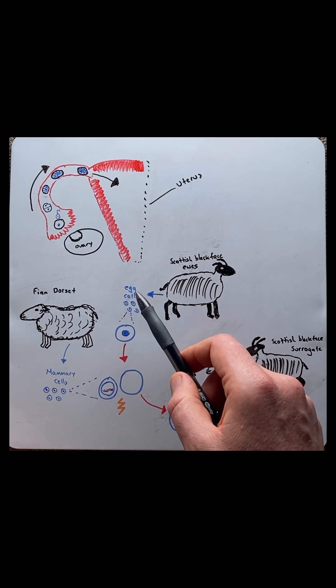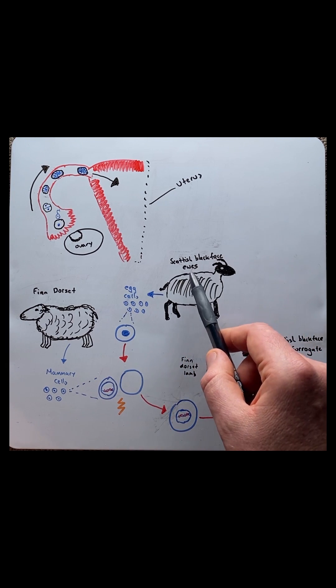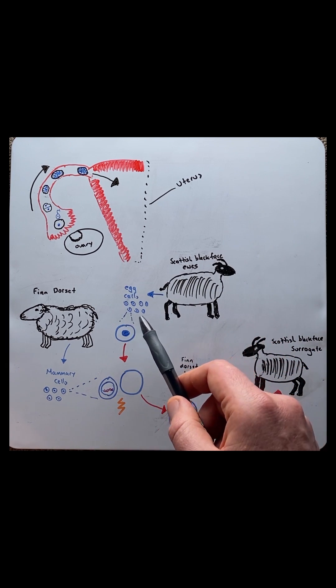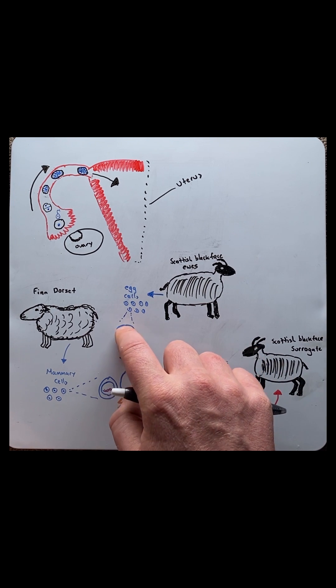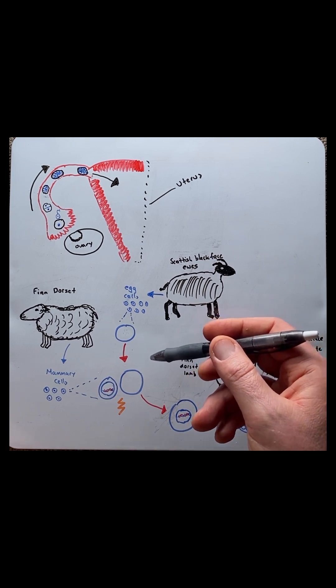Step one: they extracted egg cells from a Scottish black-faced ewe. They then used a micropipette to suck out the nucleus from the cell, which essentially gave you an enucleated egg cell.